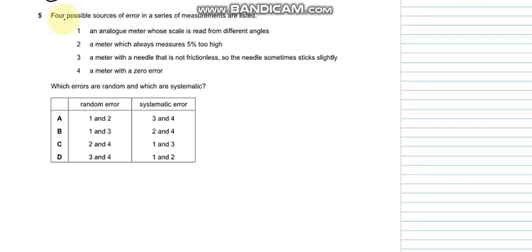Question five says that four possible sources of error in a series of measurements are listed: an analog meter whose scale is read from different angles - this is basically a random error. A meter which always reads 5% too high - systematic error. A meter with a needle that is not frictionless so the meter sometimes sticks slightly - that's also a random error. And a meter with a zero error - that is a systematic error. So seeing the tables we get B as the appropriate answer: systematic is two and four, and random is one and three.